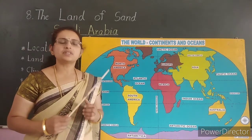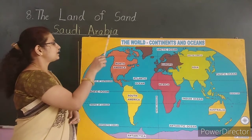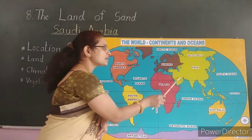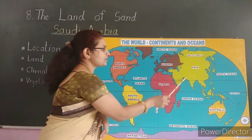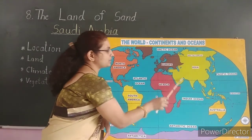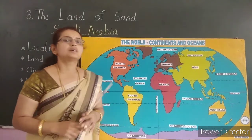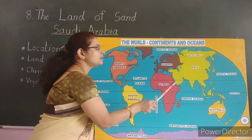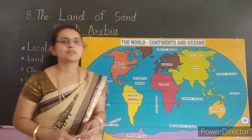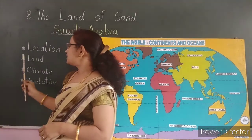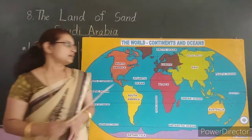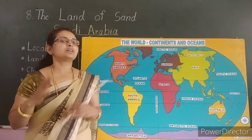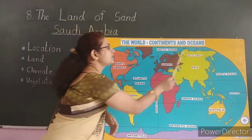In that, we study about Saudi Arabia. The Arabian Peninsula is in the south west of Asia. Saudi Arabia occupies most of the peninsula. Saudi Arabia is the fifth largest country in Asia.